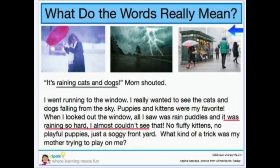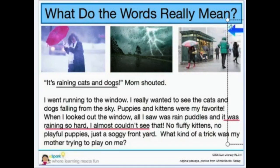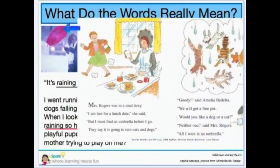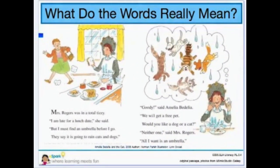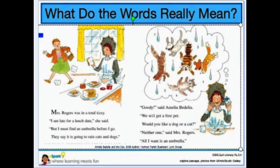It reminds me of a book I read called Amelia Bedelia and the Cat. Someone said to Amelia Bedelia, 'It's raining cats and dogs,' and she started thinking that cats and dogs were falling from the sky. Really, you don't need anything other than an umbrella if you're outside and it's raining cats and dogs.